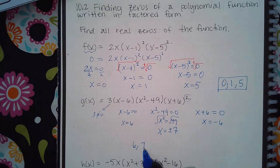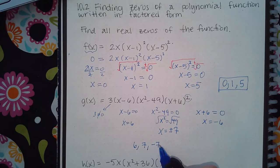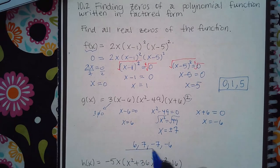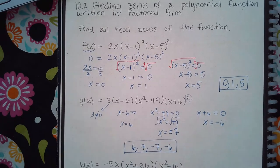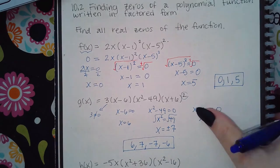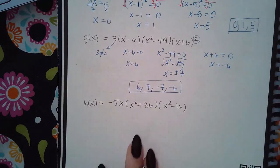There's positive 6, positive 7, negative 7, and negative 6. Those are all of the x-intercepts here.